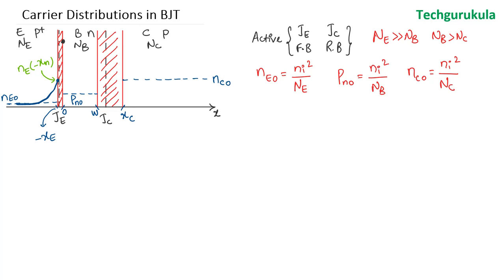The base width W is always very small compared to the diffusion length of holes inside the base, so W/L_P << 1. The holes injected from emitter to base are in high concentration. Since the collector junction is reverse biased with high electric field directed from N to P side, any holes reaching x = W get swept into the collector, making the carrier concentration zero at x = W. With W very small compared to L_P, we take a linear profile.